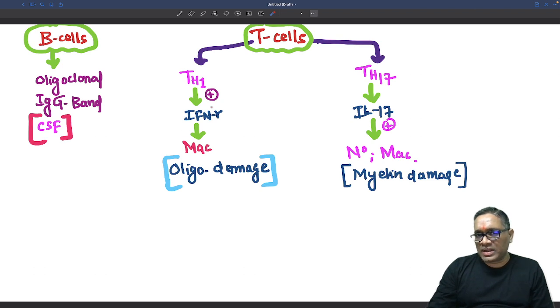Th1 activates interferon gamma, which activates macrophages causing oligodendrocyte damage. Th17 cells release interleukin-17, recruiting neutrophils and macrophages that cause myelin destruction.